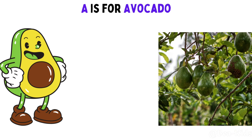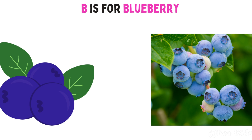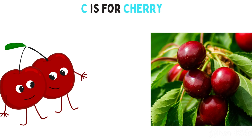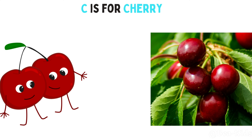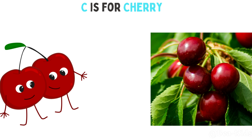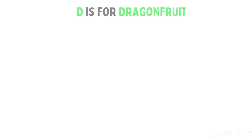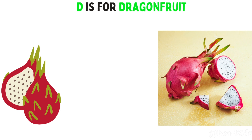A is for Avocado. B is for Blueberry. C is for Cherry. D is for Dragon Fruit.